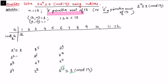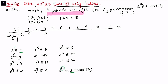Continuing: 2 to the power 1 is 2, so index of 2 is 1. 2 to the power 2 is 4, so index of 4 is 2. 2 to the power 3 is 8, so index of 8 is 3. 2 to the power 4 is congruent to 3 mod 13, so index of 3 is 4. 2 to the power 9 is congruent to 5, 2 to the power 10 is 10, and 2 to the power 11 is 7. This completes our table for the calculation of indices.